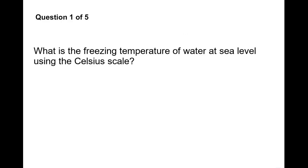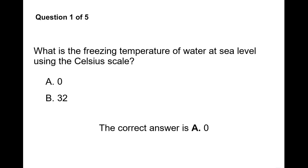Question 1. What is the freezing temperature of water at sea level using the Celsius scale? A, 0 or B, 32? The correct answer is A, 0.